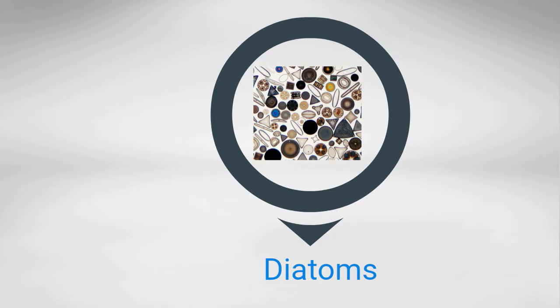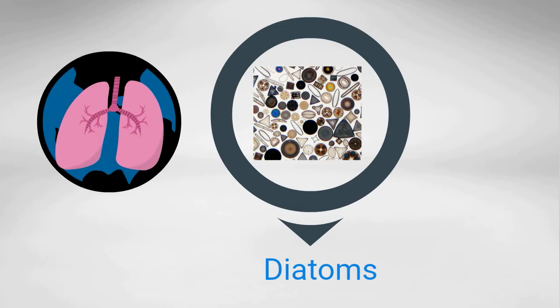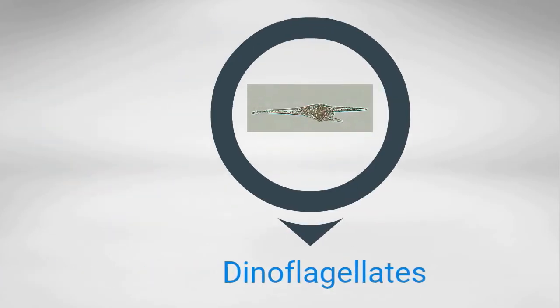Next up are diatoms, which look almost like floating crystals. They make up a large portion of the phytoplankton found in the ocean, which accounts for over 50% of the oxygen produced on earth. And then you have the algae called dinoflagellates, which move using two flagella.